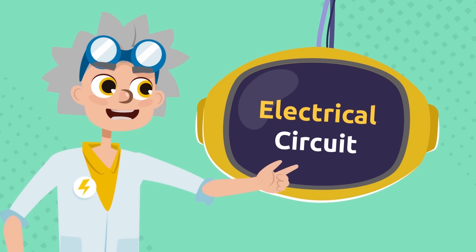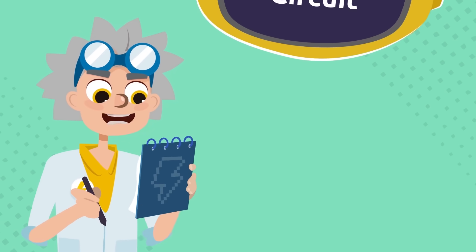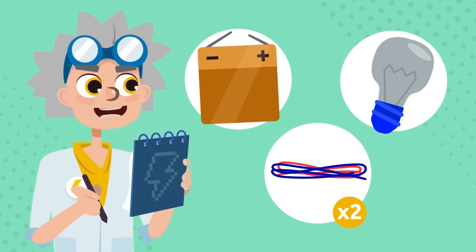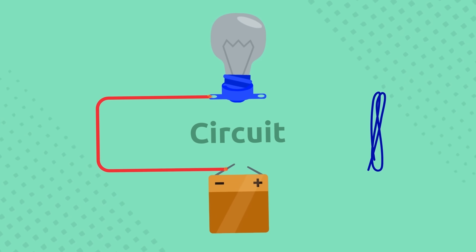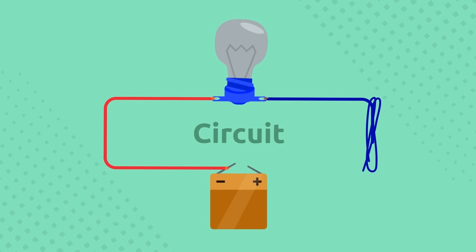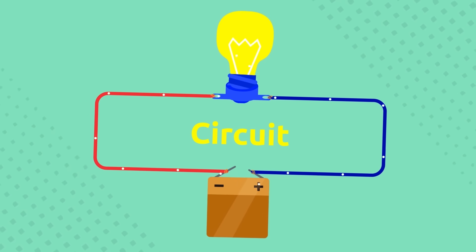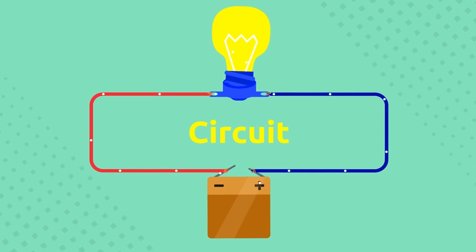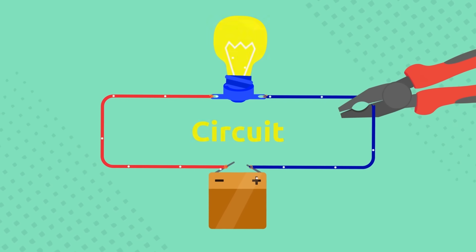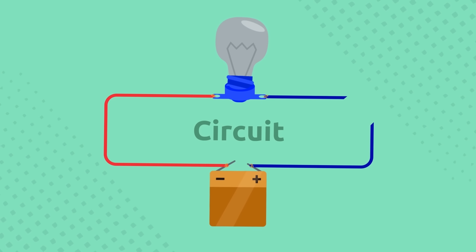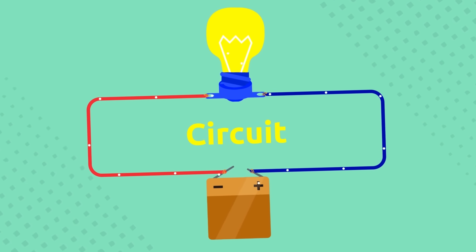We will start by building an electrical circuit, which is a closed path that electric charges flow through. I'll need two wires, a light bulb, and a battery. I attach one end of the wire to the light bulb and the other to one end of the battery, then repeat with the other wire. The electric charges flow from the battery to the light bulb through the wires, and the light bulb lights up! If I disconnect the circuit, the current stops and the bulb turns off. When I reattach the wire, it turns back on.